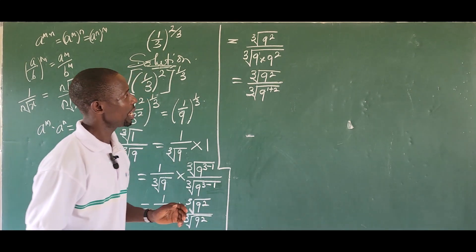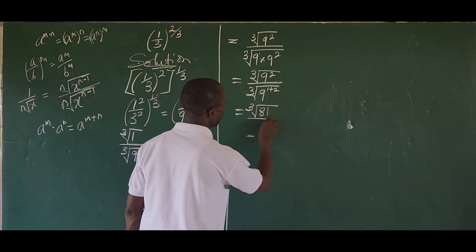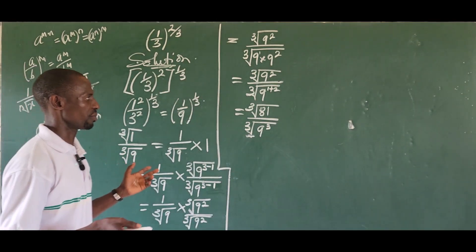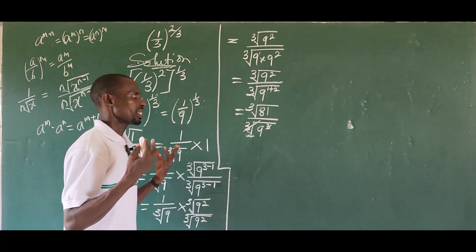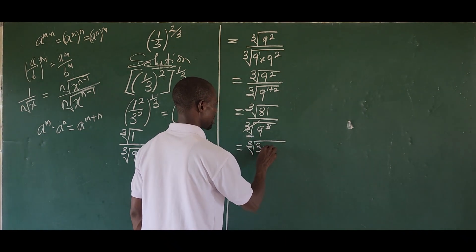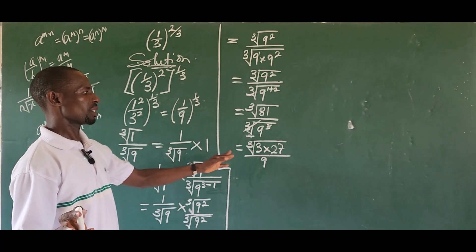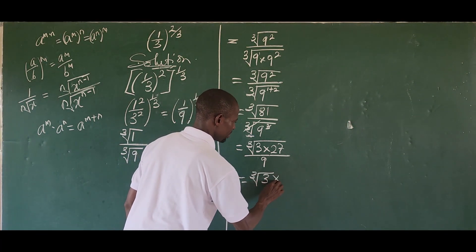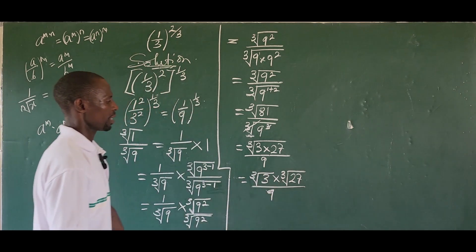Nine squared gives us 81, so this is equal to the cube root of 81, all over the cube root of nine to the power of three, which simplifies the denominator to nine. Now 81 can be written as three times 27, because 27 is a perfect cube. So this gives us the cube root of three times 27, all over nine.